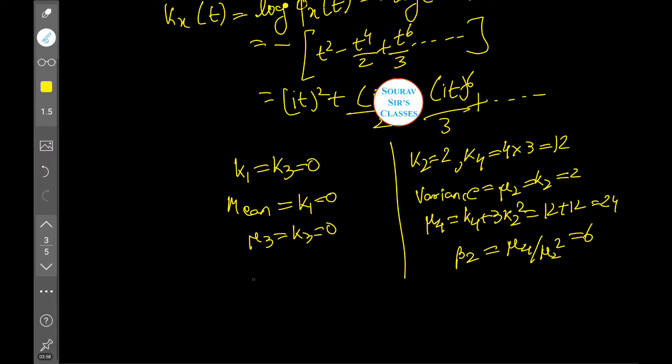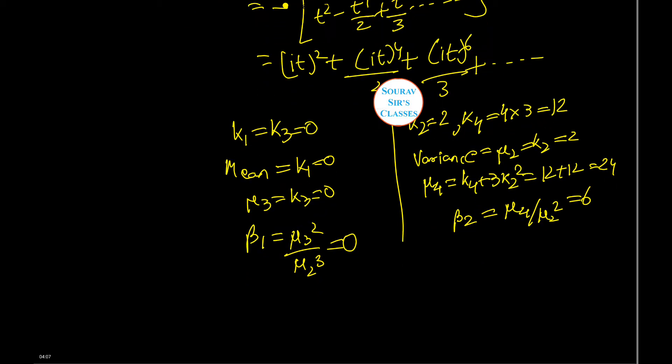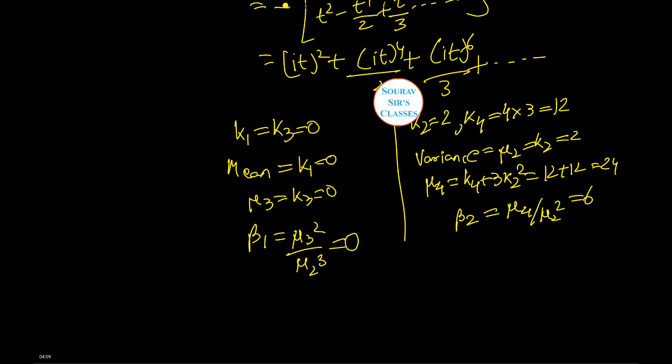Also, we calculate beta₁, which is equal to μ₃² by μ₂³, which is nothing but equals to zero. The mean deviation about mean for standard Laplace distribution is 1. Please try it on your own.